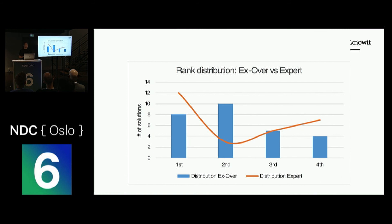Wouldn't it be cool if you could use AI to help people with low back pain? This was a simple proof of concept done as part of my master's thesis, and I think the results are pretty good for that. I definitely think you could use AI in scenarios like this — maybe not as the only tool, but as a support for medical experts to take away some of the workload, so they can focus on human relations that computers may not handle as well.